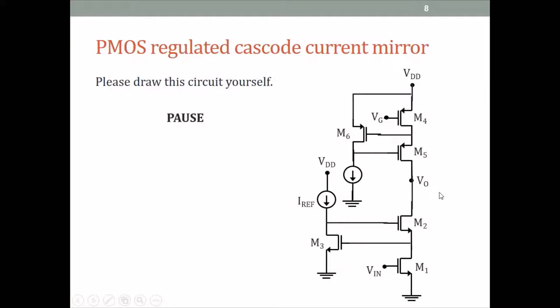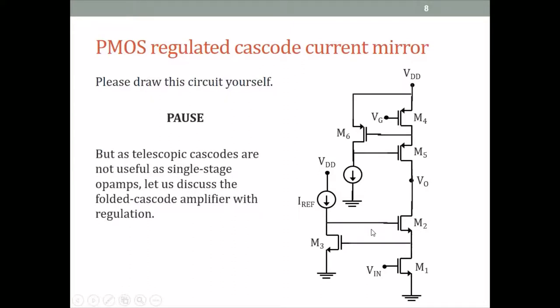But as we saw when we discussed the telescopic cascode itself, it does not make a good op-amp because of the output voltage swing limitations under unity gain feedback. The same will apply here because in the fundamental structure, this is still a telescopic cascode — we have just added regulation to it. So let us instead discuss a regulated folded cascode.